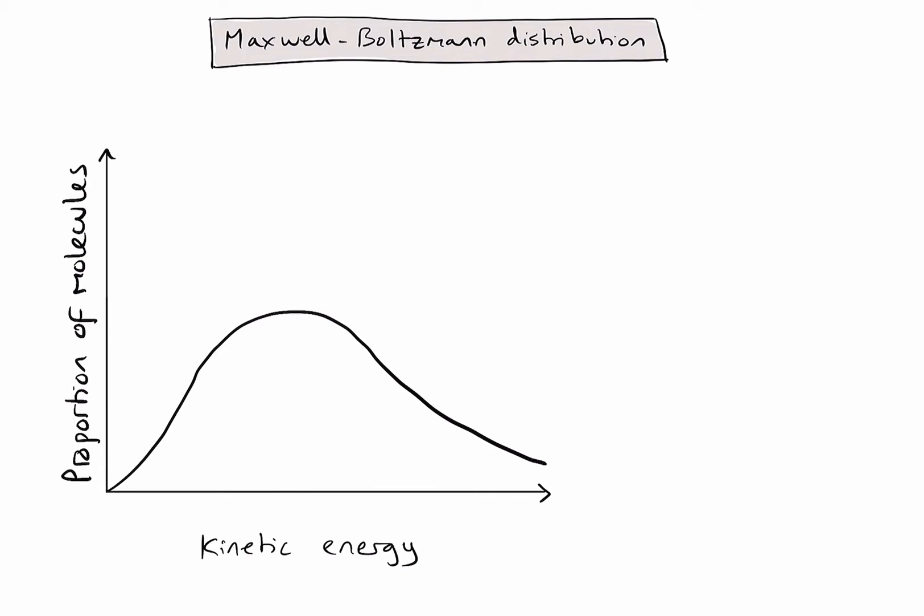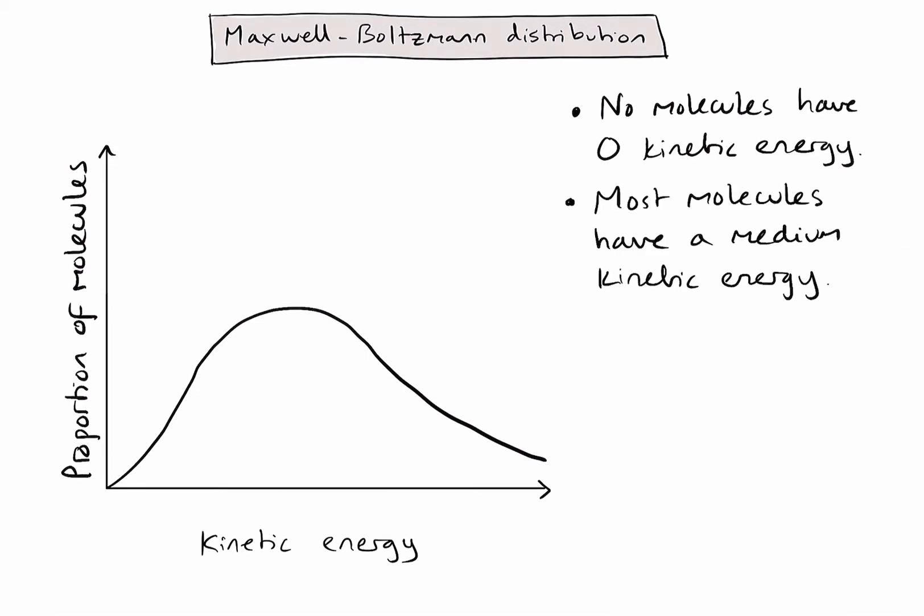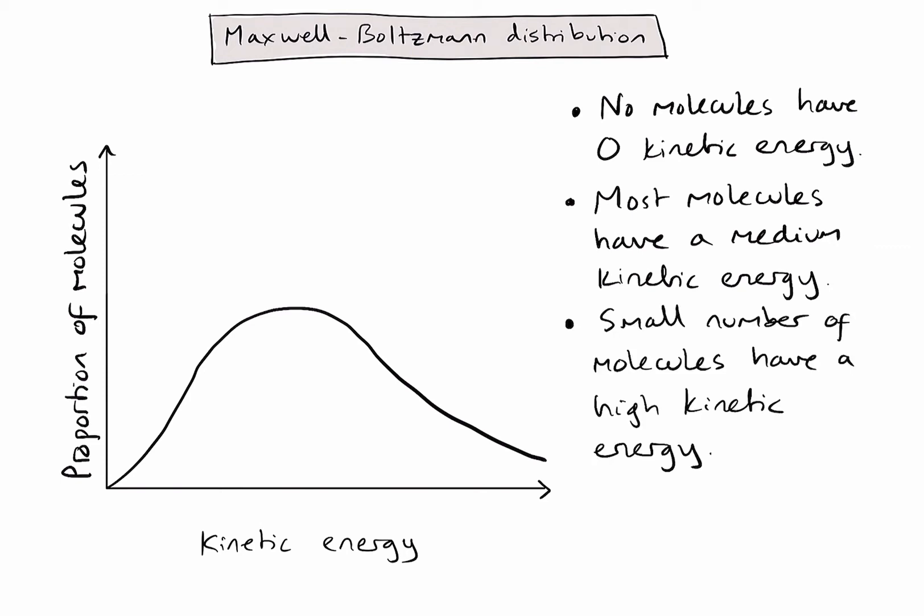So what does this graph tell us? First, note that no molecules have zero kinetic energy. Secondly, the peak of the curve suggests that most molecules will have a medium kinetic energy. And finally, a small number of molecules will have a high kinetic energy. The key point is that a gaseous substance at any given temperature has a distribution of kinetic energy in its particles — they do not all have the same kinetic energy.